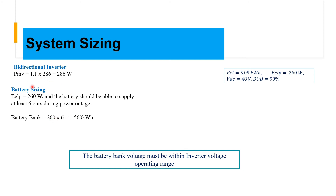In this system we are using 48 volts, which means the voltage range of the inverter must be within the 48-volt range.